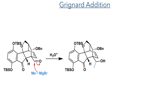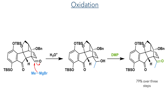This aldehyde was required for a Grignard addition. Methylmagnesium bromide added to the aldehyde to produce a secondary alcohol upon workup. This was then oxidised to a ketone again using Dess-Martin periodinane, with a 79% yield over three steps.